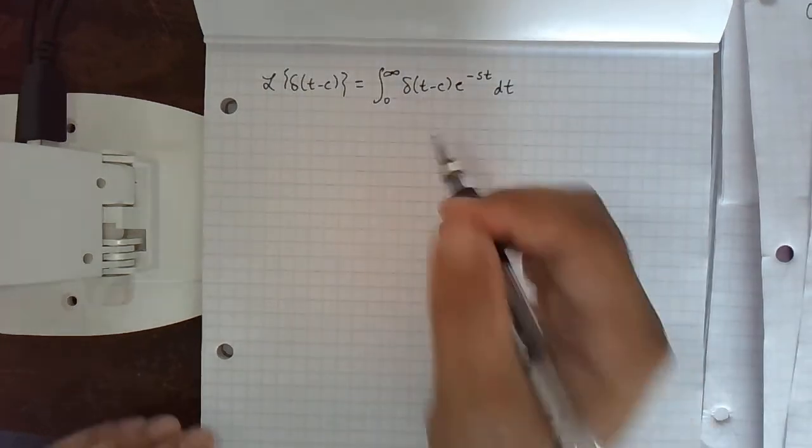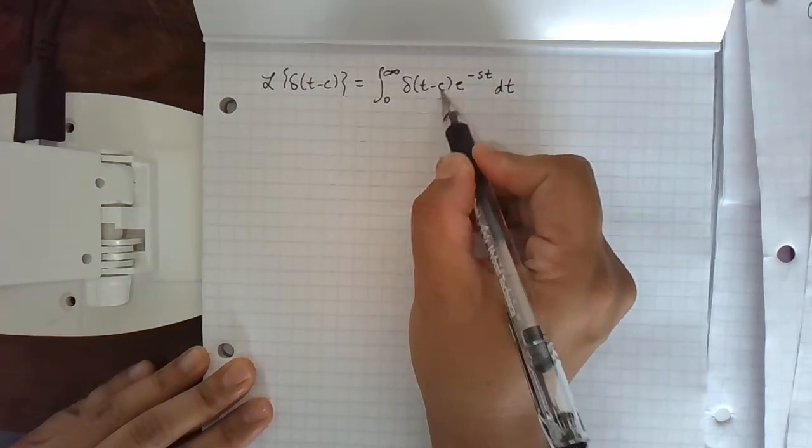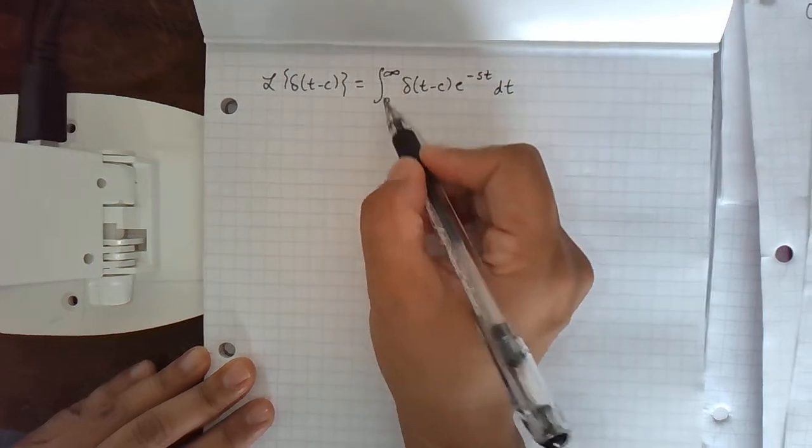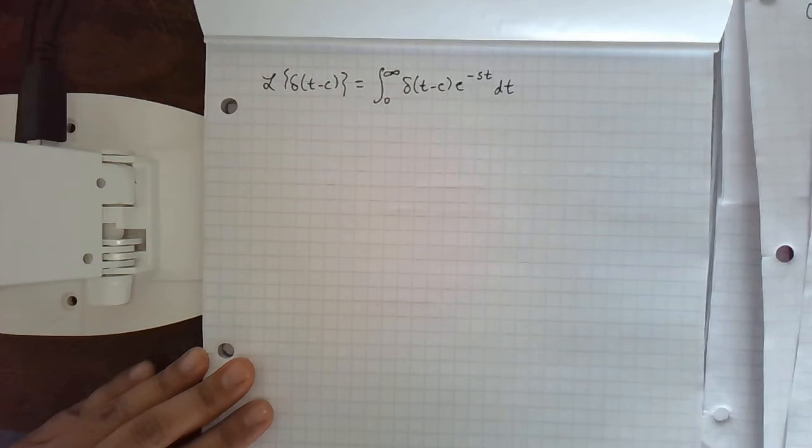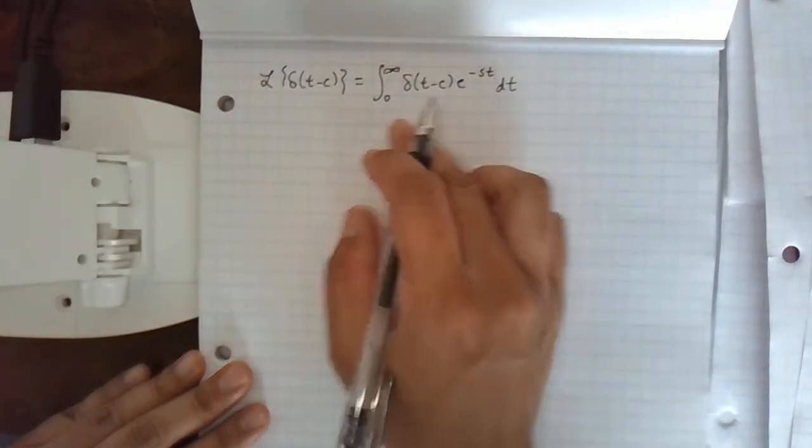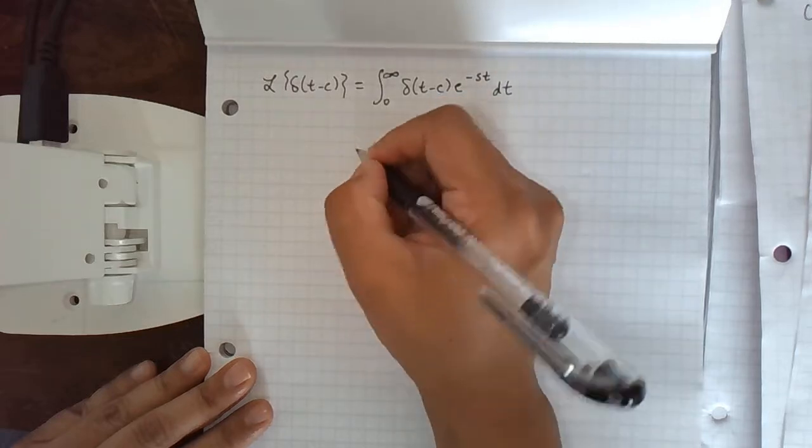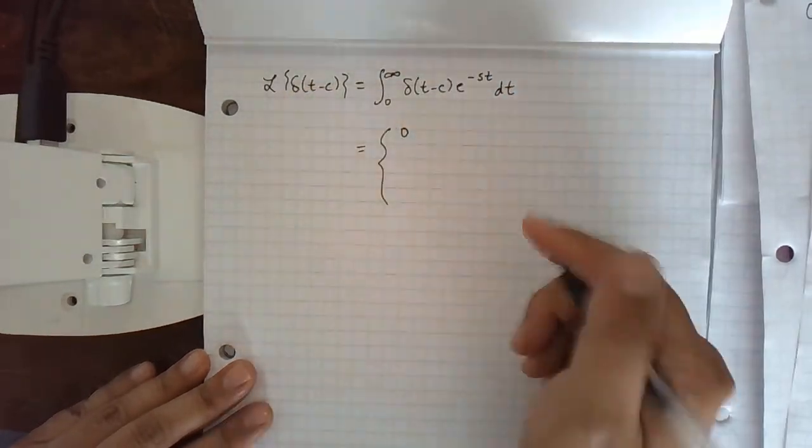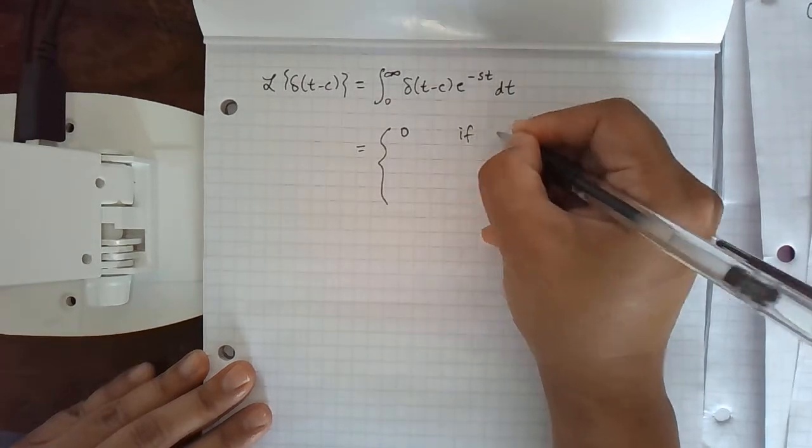We notice that this function is zero except at the value c. So if c is less than zero, then the non-zero part of the function is not inside the integral, and this whole function will be zero in that interval. So that means this Laplace transform is zero if c is less than zero.